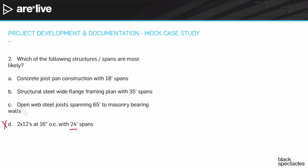And then C: open web steel joists spanning 65 feet to masonry bearing walls. You might choose that because you don't want any columns and want wide open flexible space. But if you imagine a multi-story office building with 65-foot open web steel joists, those things are going to bounce like mad. They're going to be very expensive and just don't fit office use in normal parlance. There's nothing in the documentation saying we need clear floor areas. So I'm going to get rid of C as well.